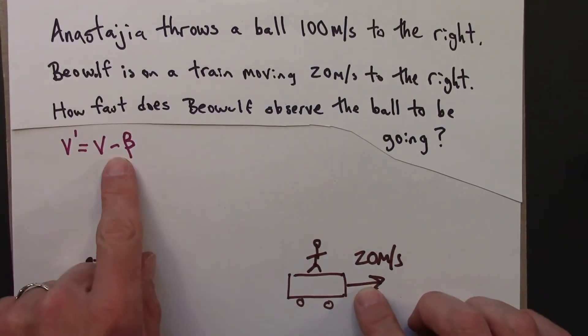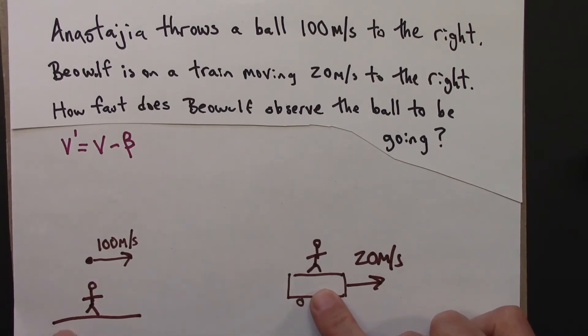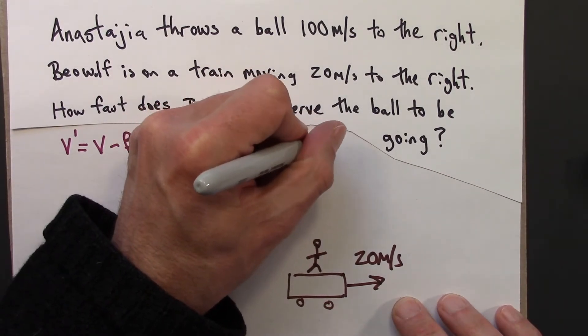So in this formula beta, that's how fast one reference frame is moving with respect to the other. So beta in this problem is 20 meters per second.